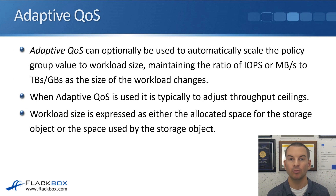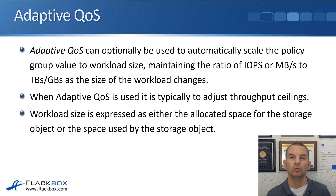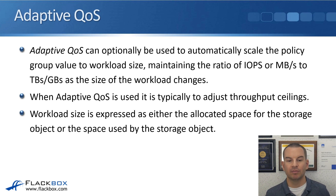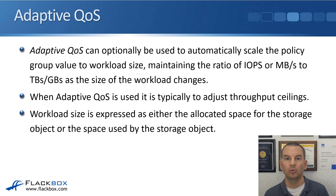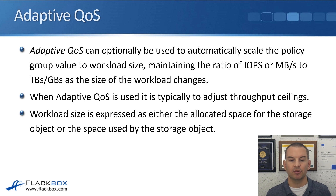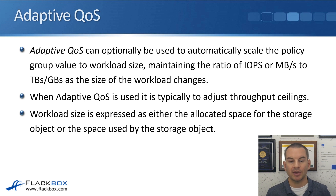The new feature that helps with that is adaptive QoS. Adaptive QoS can optionally be used to automatically scale the policy group value to the workload size, maintaining the ratio of IOPS or megabytes per second to the size in terabytes or gigabytes as the size of the workload changes. As the size of the volume goes up, it will get more throughput; if it goes down, it will get less. Adaptive QoS is typically used to adjust throughput ceilings rather than floors.